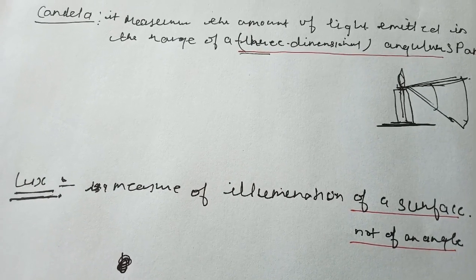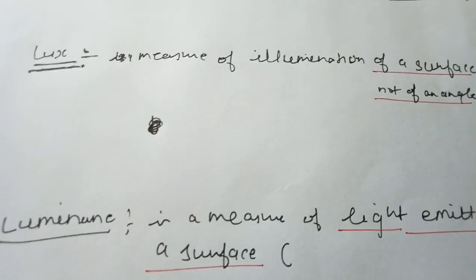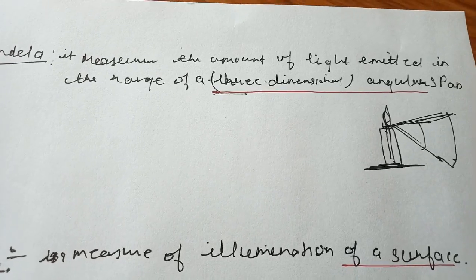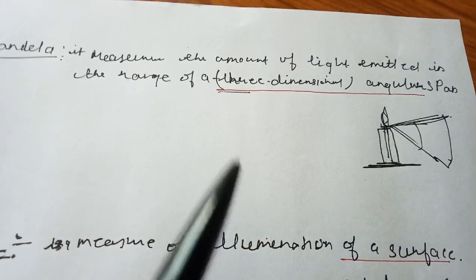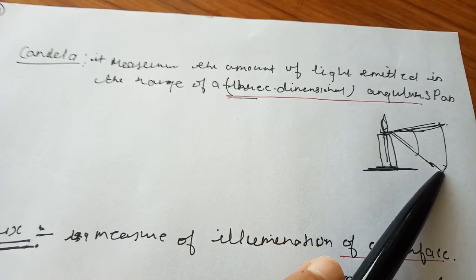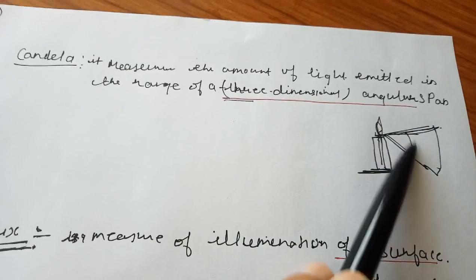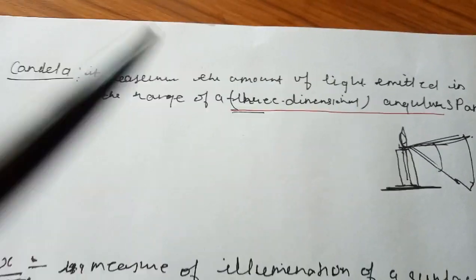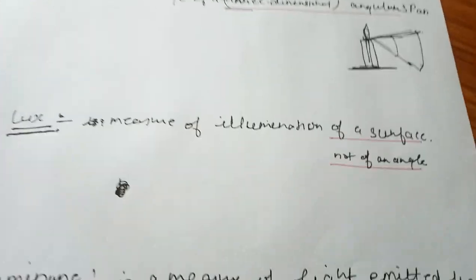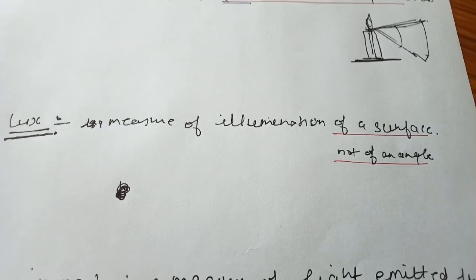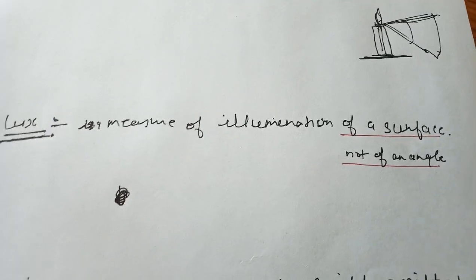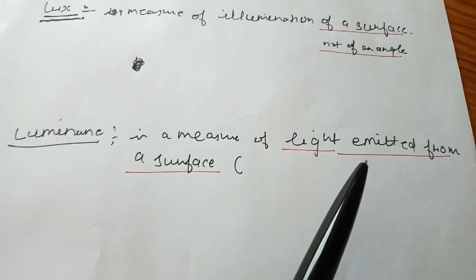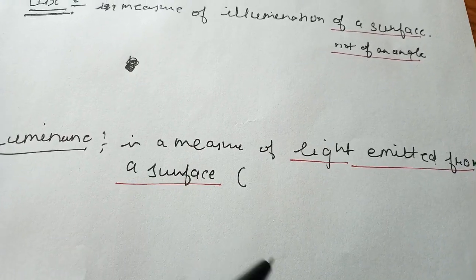Now we discuss the key terms: candela, lux, and luminance. Candela measures the amount of light emitted in a three-dimensional angular span — it is the measure of luminous intensity in a particular direction. Lux is a measure of illumination of a surface — the total illumination across a surface in all directions. Luminance is the measure of light emitted from a surface, measured in candela per square meter.